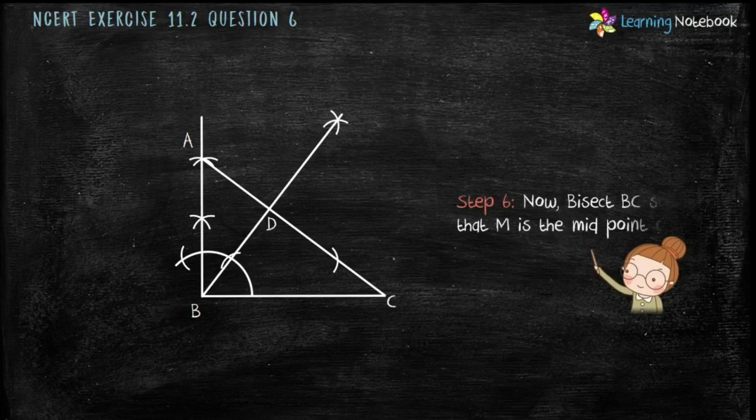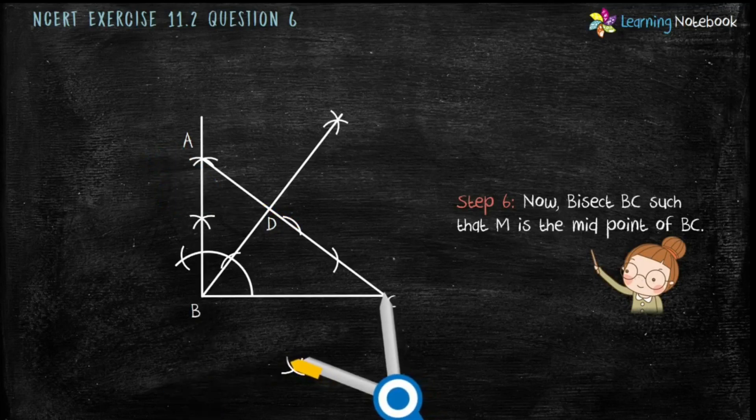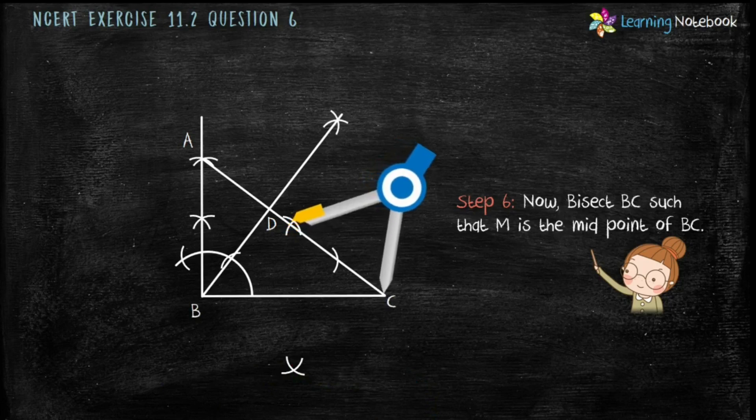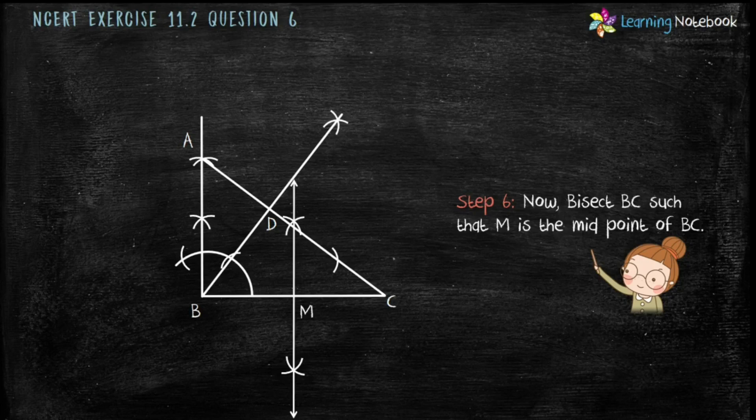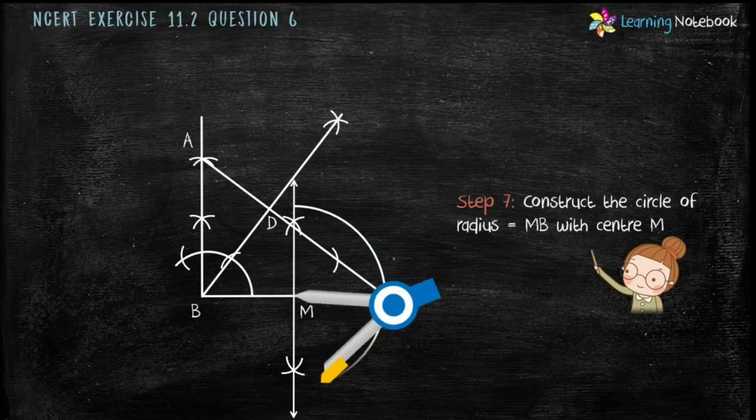Therefore step 6 is bisect BC such that M is the midpoint of BC. Now students we have got the center M and radius MB. So let's draw a circle which passes through B, C, D. Now step 7 is taking M as the center and radius equal to MB.